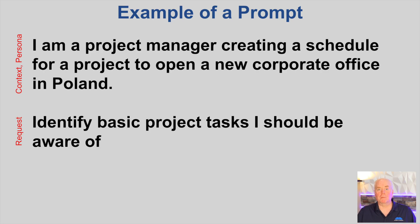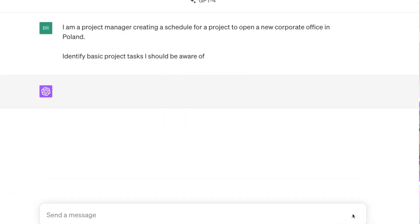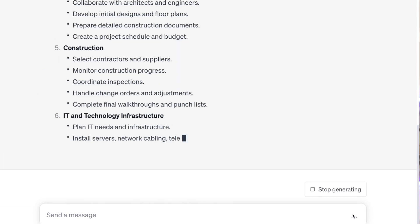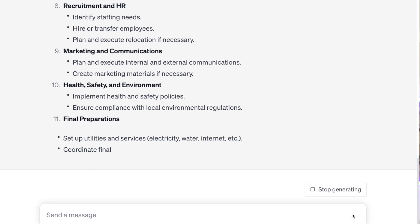So let's look at an example of a prompt. You can see I put in there that I'm a project manager, I'm looking for a schedule, and it's for an office opening in Poland. That gives it context so it can understand what persona it's going to be working with, and then I give it a request: please help me identify the basic tasks. I actually took this prompt, put it into GPT-4 and let it run — here's what it looks like. That's really quite a nice job that it did.